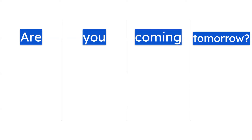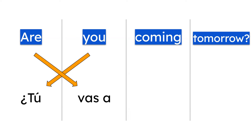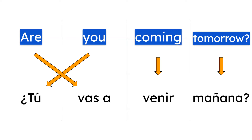Now for questions. 'Are you coming tomorrow?' Do we need present or future structure? That's right — future, because of tomorrow. The verb to come is venir. So: tú vas a venir mañana. ¿Vas a venir mañana?